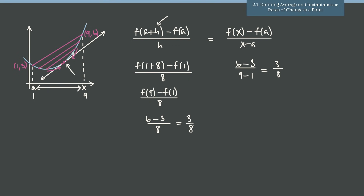The important thing is knowing how to do this from a graph. If you're given a graph or a table of values — for instance the points (1, 3) and (9, 6) along with other points — you simply plug into the difference quotient to calculate average rate of change.